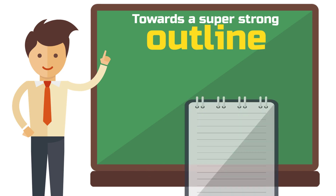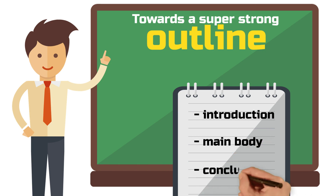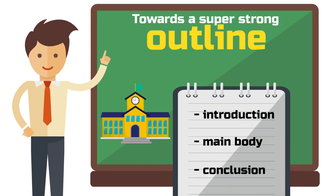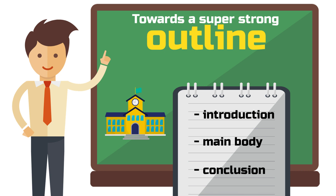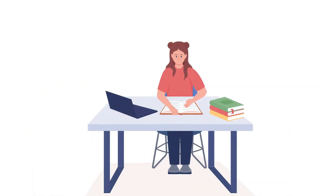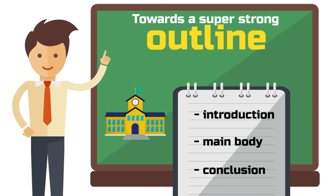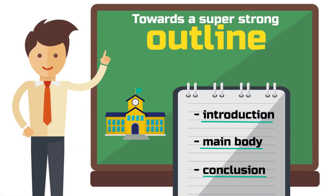We all learn the classic structure of a text in school: introduction, main body, conclusion. However, academic papers differ from essays that follow this structure. Here we need to put a little more effort into preparing such papers, no matter if they are an assignment for a class in college or the final thesis of your studies. In principle, the basic structure of introduction, body, and conclusion is not wrong — it is just too broad to work with for an academic paper. That's why today we are going to delve into more detail.